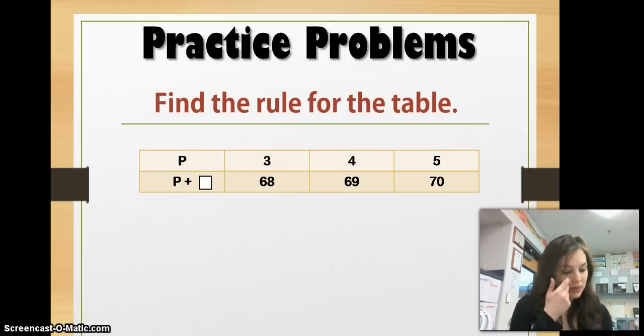So, we know that we have 3, 4, and 5 across the top. We have 68, 69, and 70 across the bottom. We know that we have a rule of P plus something. So, we could take 68, and subtract it from 3, and we would get 65. So, let's write that here. We could take 4, and we could subtract 69, and we have 65.